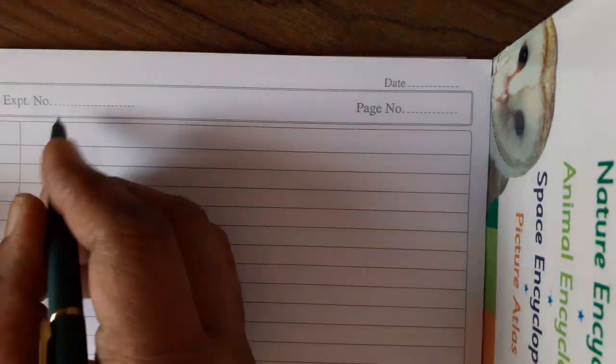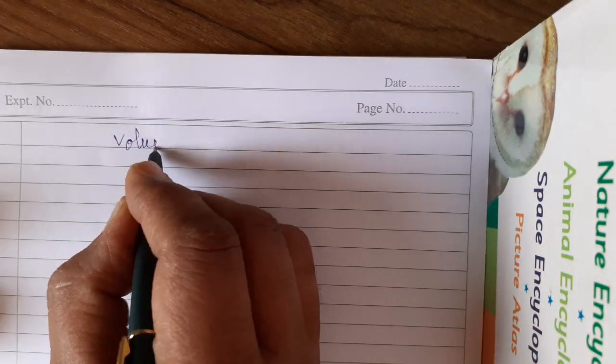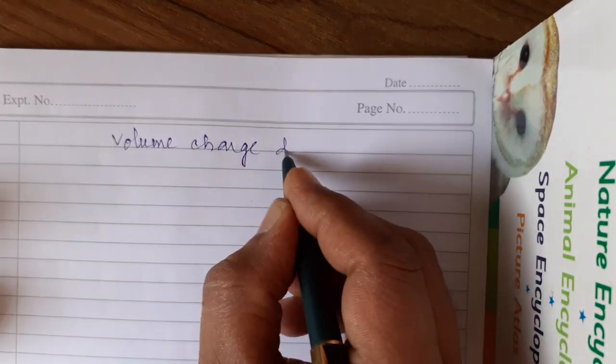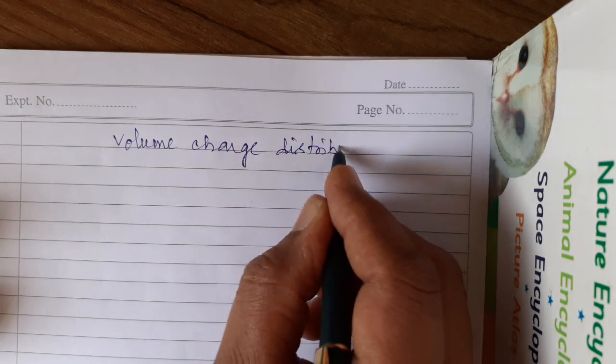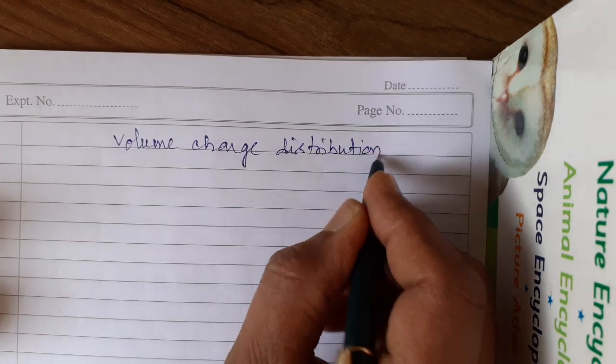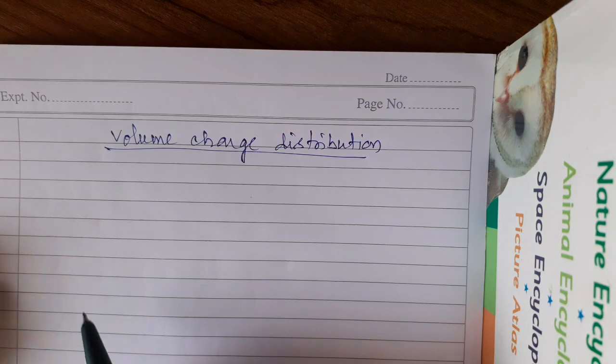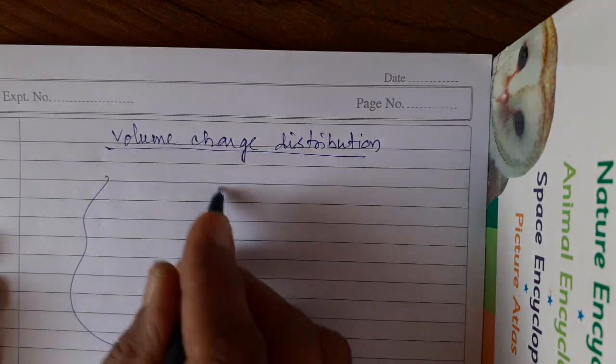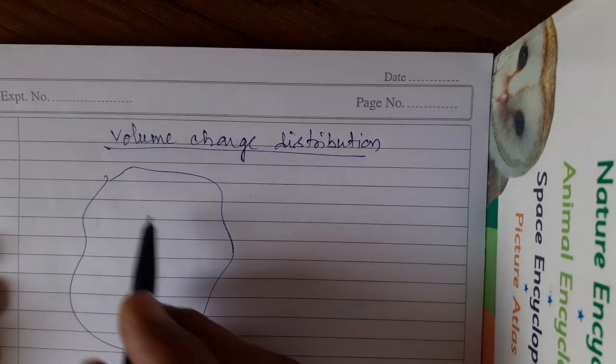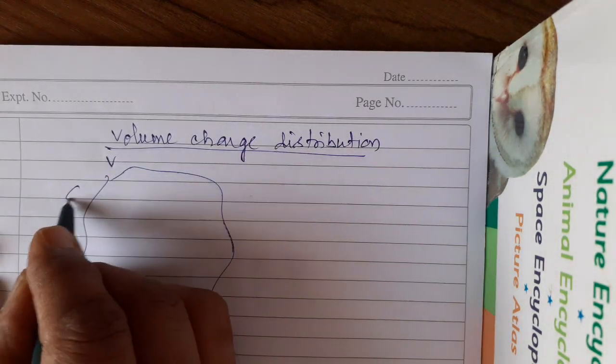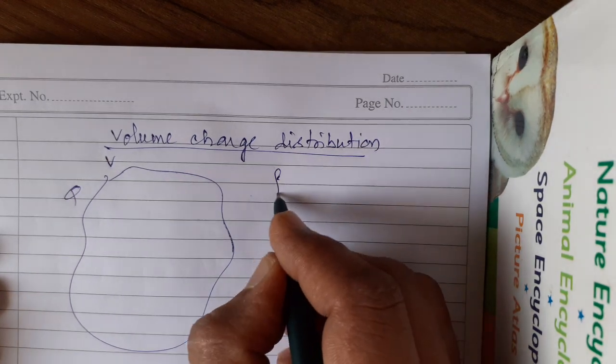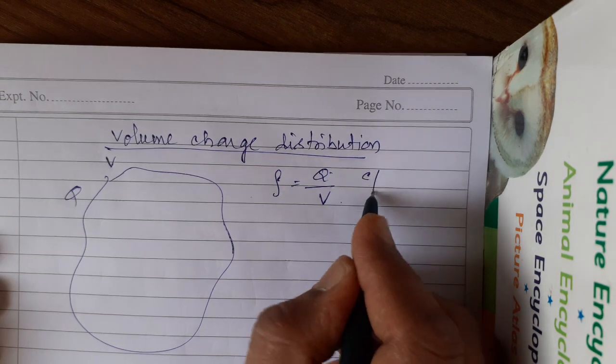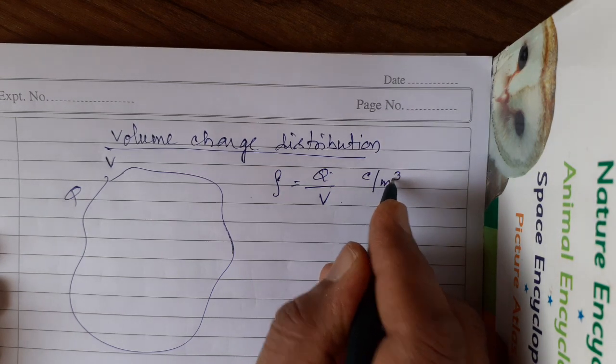the next is volume charge distribution. Volume charge distribution means the charge is distributed throughout the volume. Suppose you take a three-dimensional thing which has such a volume V, charge is Q. So rho equal to Q by V. Charge per unit volume. Units are Coulomb per meter cube. This is a rare case.